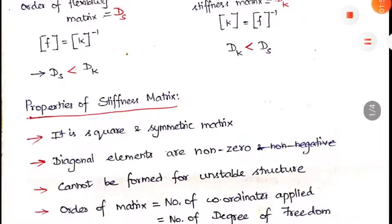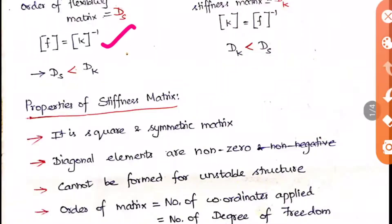The flexibility matrix and stiffness matrix are inverses of each other. If you have the flexibility matrix, you can invert it to get the stiffness matrix and vice versa. This is frequently asked in objective questions — they give you a stiffness matrix and ask you to find the flexibility matrix using the standard matrix inverse.